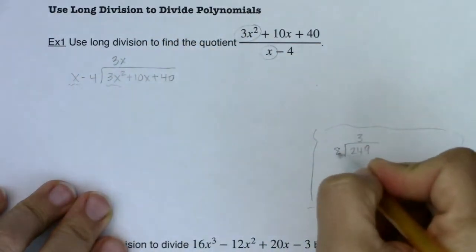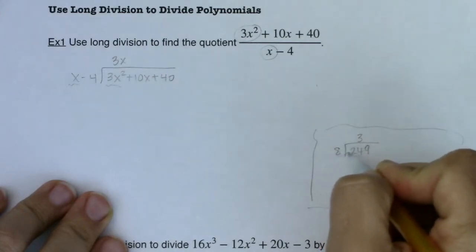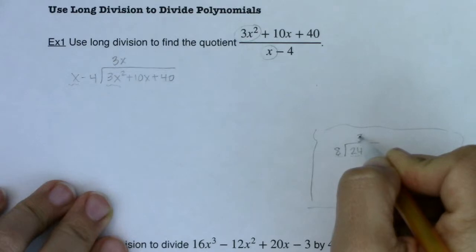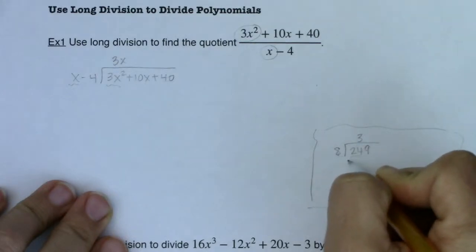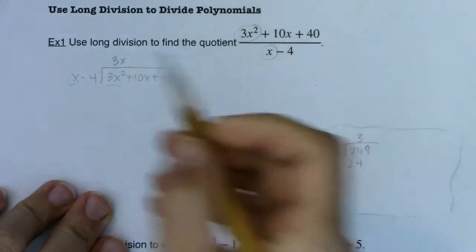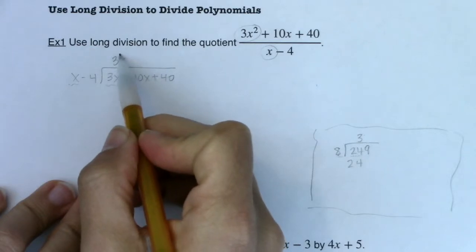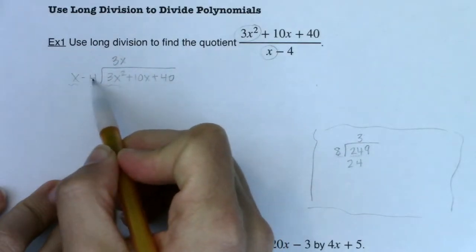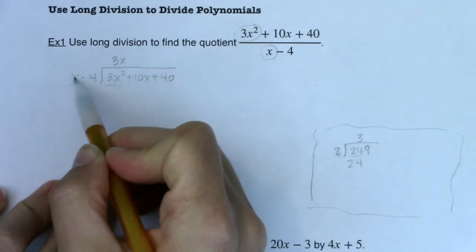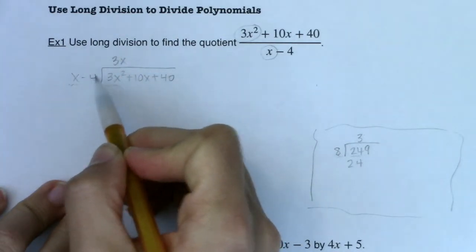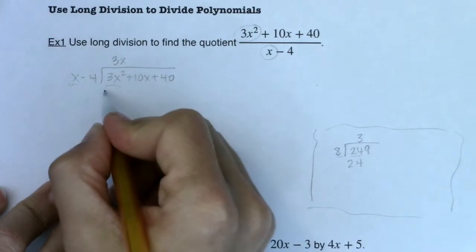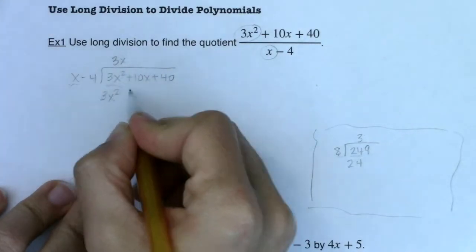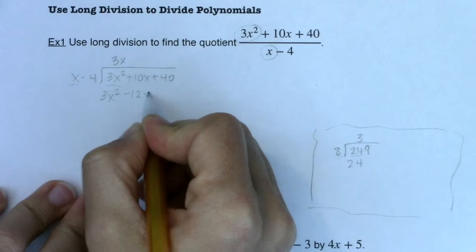So let's go back to our numerical example. After you figure out what you need to multiply 8 by to get to 24, the next thing you do is you take 3 and multiply it by 8 and write 24. Well, I'm going to do the same thing here, but just take a look. You're multiplying 3x to a binomial. So you need to multiply the 3x to the x and the 3x to the negative 4. So 3x times x is 3x squared. 3x times negative 4 is negative 12x.